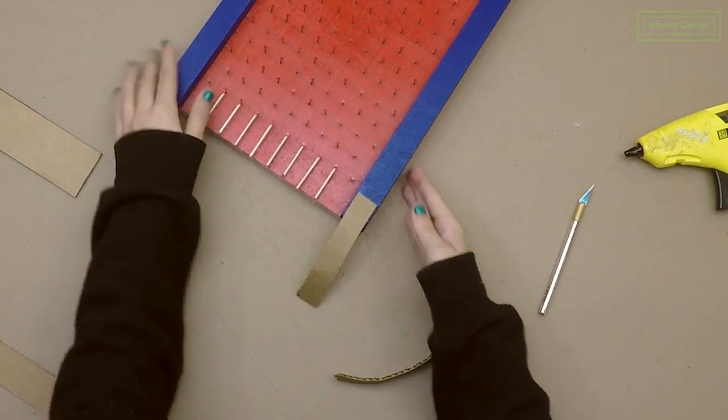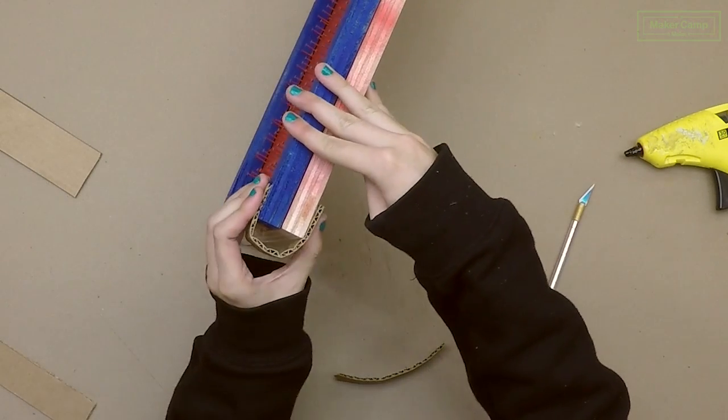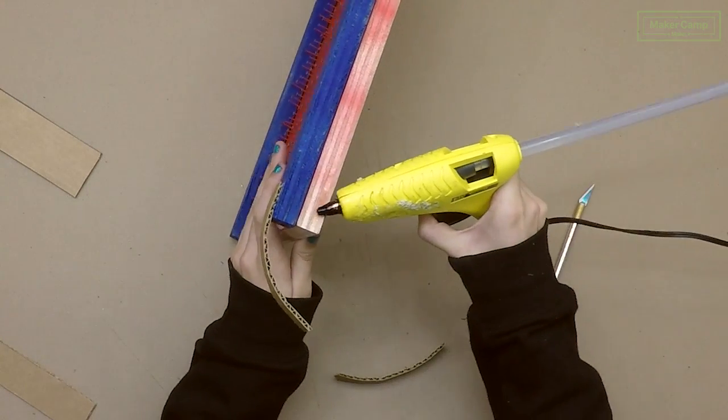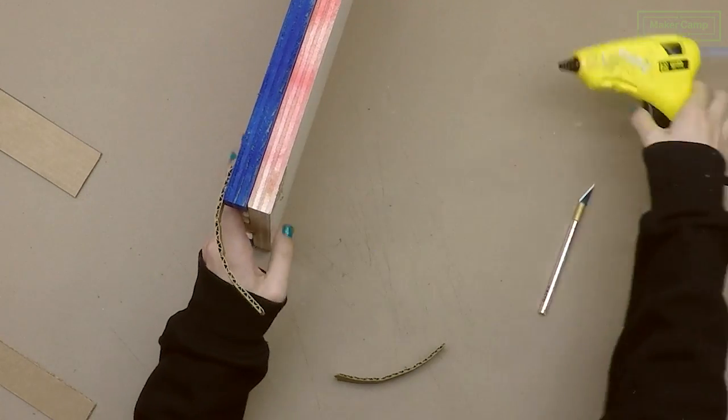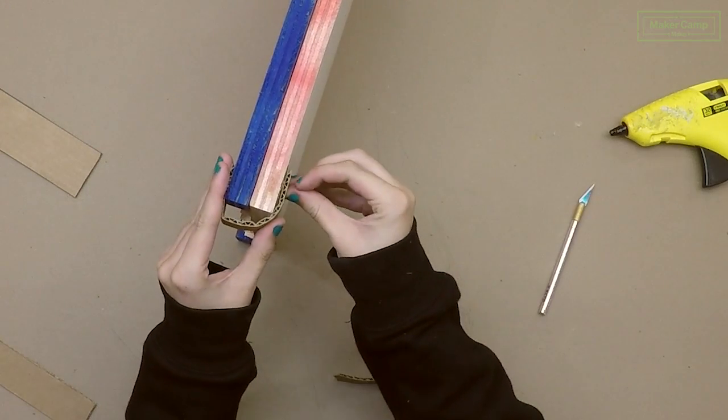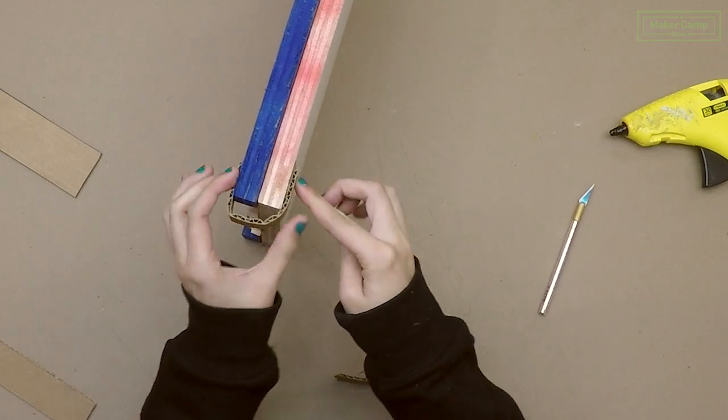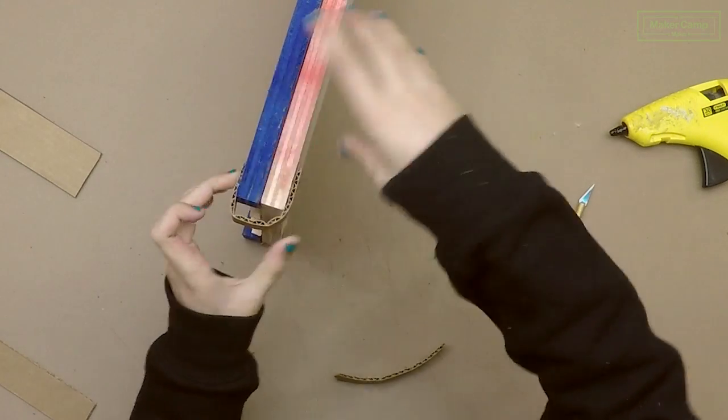Make sure you leave a little bit of space on the bottom so that you can slide your cardboard piece in and out with ease. Attach the strap on both sides of your board with hot glue.